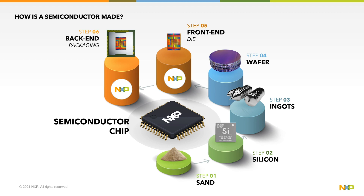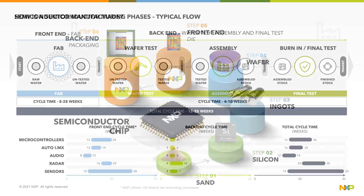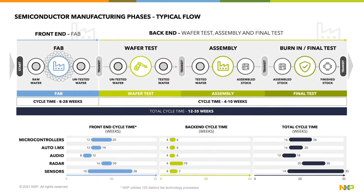At the highest level, we think of semiconductor manufacturing as a front-end process we call fab, and a back-end process which typically involves wafer test, assembly, and final testing. This chart indicates the flow and cycle times for a typical semiconductor. There are many different flows depending on the product, but this represents the most typical flow.